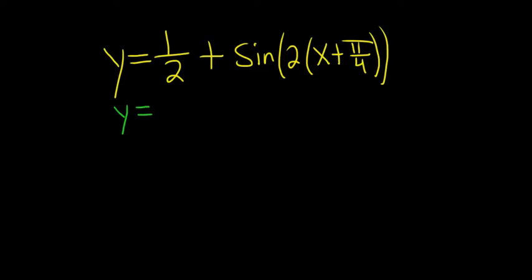That form would be y equals c plus a sine of b times x minus d. Whenever things are written in this way, we can find various things for the trig function.